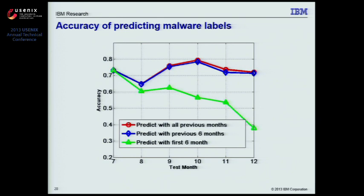Audience: I also noticed that the accuracy is between 0.7 and 0.8. Is that good enough? Response: We think it's doing well, though it really depends on the dataset. A key improvement is that we can look at the distance between new samples and the existing cluster — if they're too far away, we can identify them as a new strain of malware, separate them, and analyze them to create a new family.